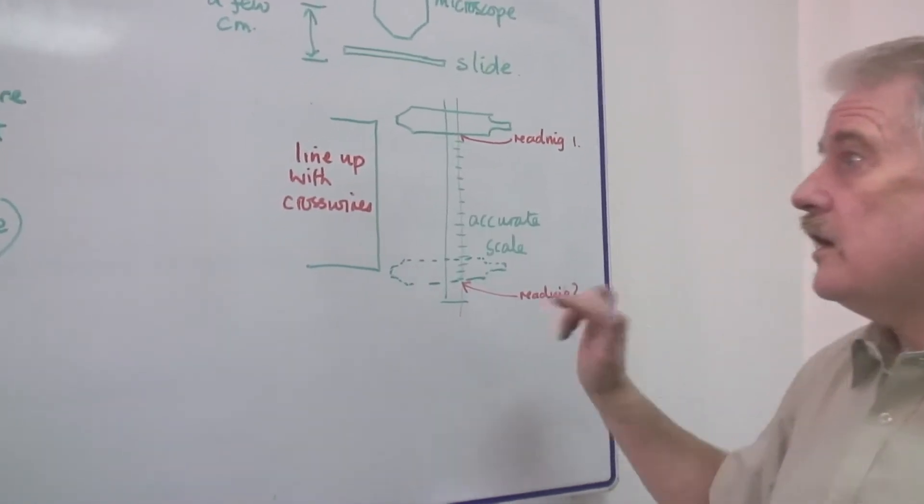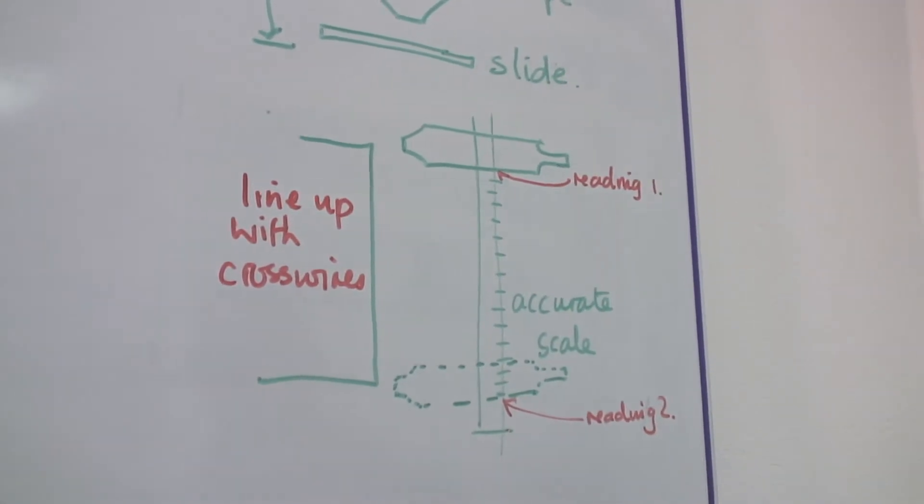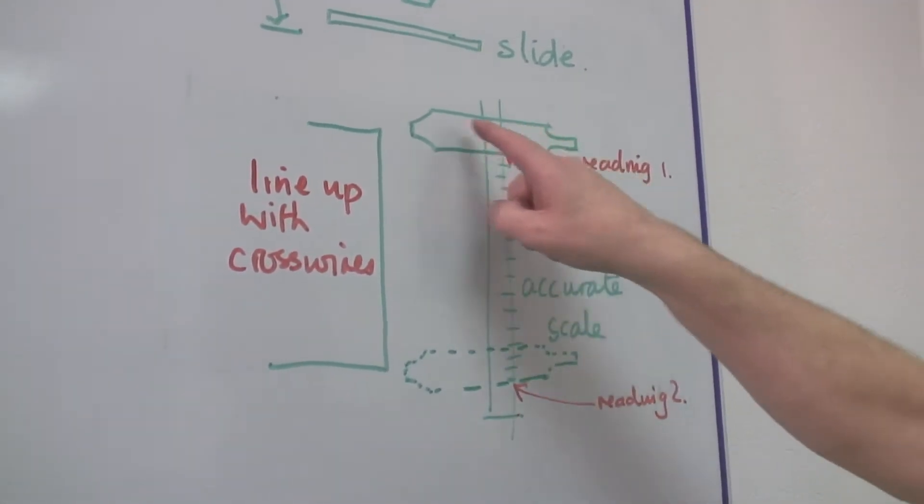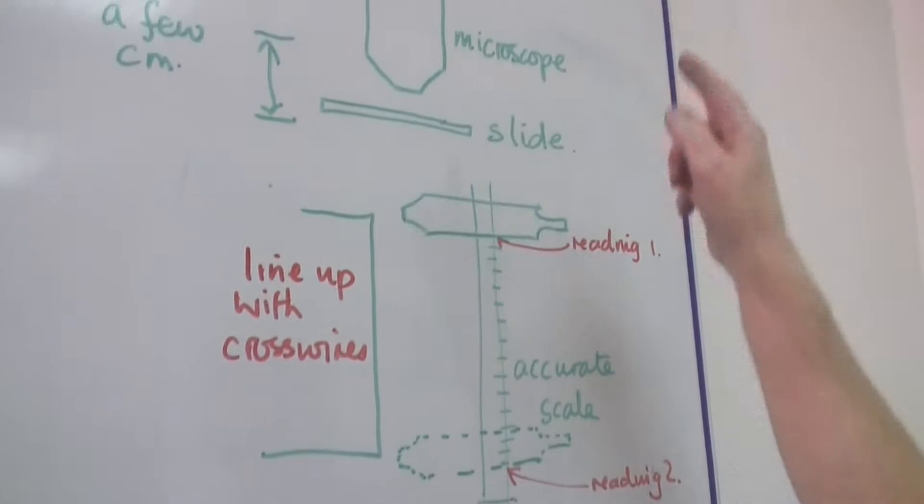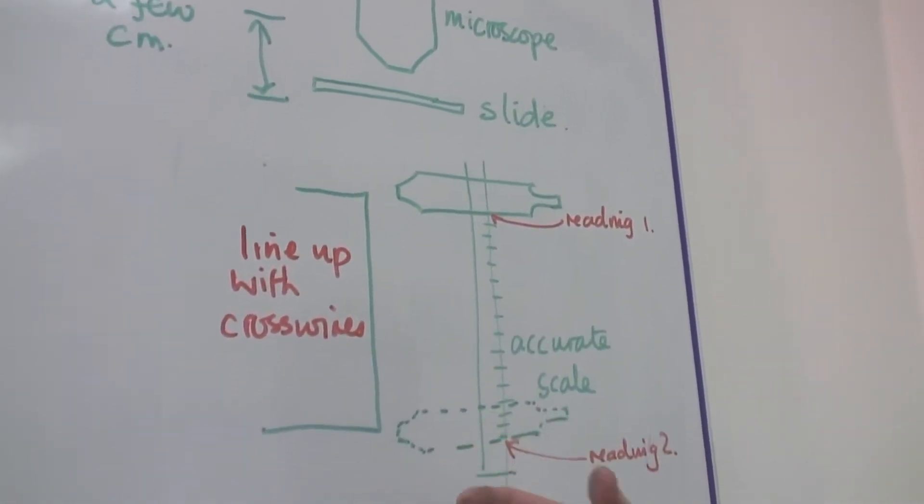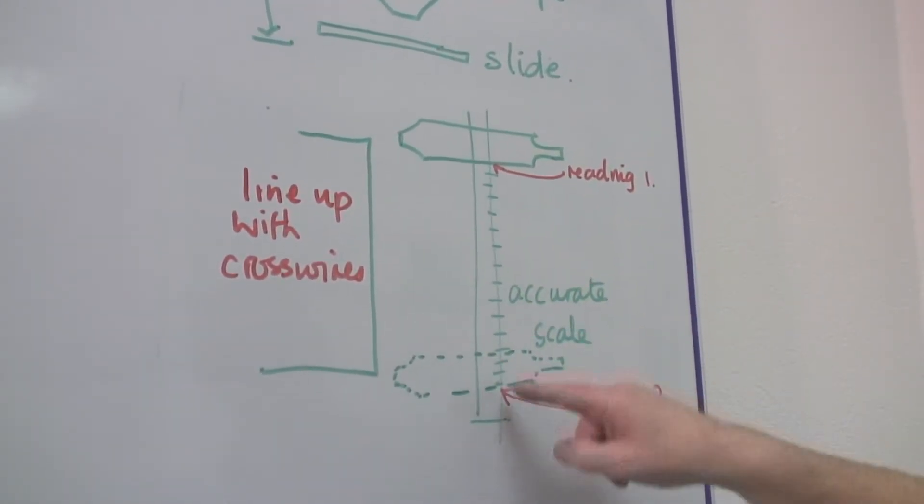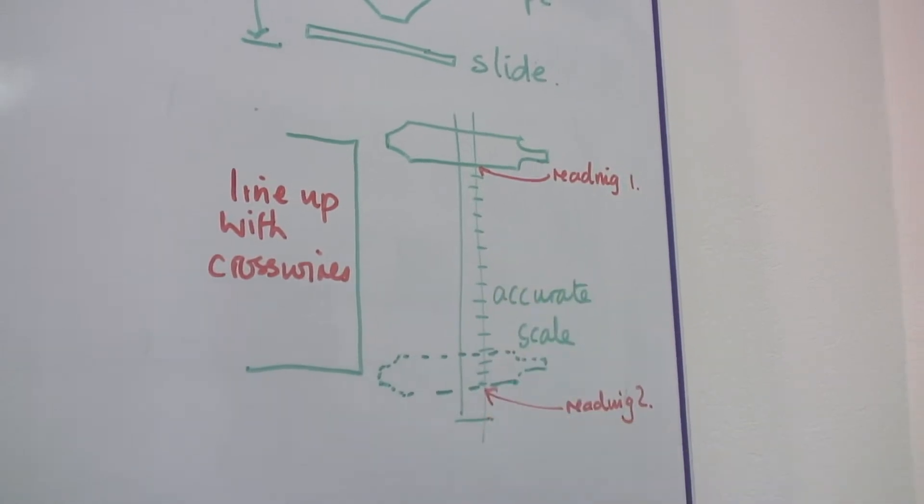And we can do this with a special kind of microscope called a travelling microscope, which is the same basic object, a microscope, but mounted on an accurate scale. It's on a slide which moves along the scale. And as it moves along the scale, you can read where on the scale it is.